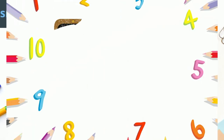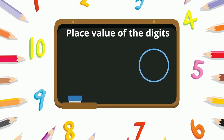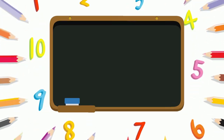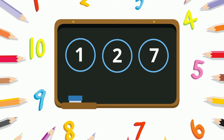To read the place value of the digits in a number, you have to start reading from the right side. In the number 127, the first digit from the right — 7 — is the units digit. The digit next to it — 2 — is the tens digit. The digit next to that — 1 — is the hundreds digit. So in number 127 there are seven units, two tens, and one hundred.